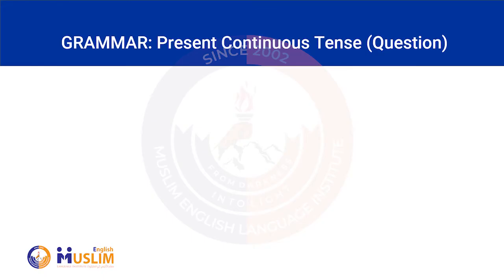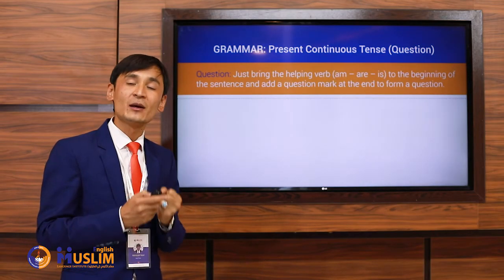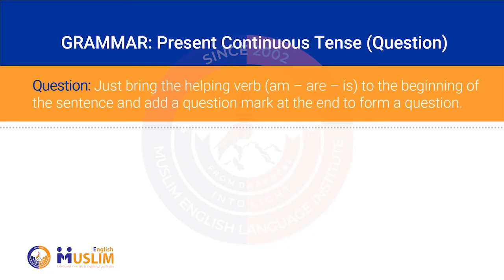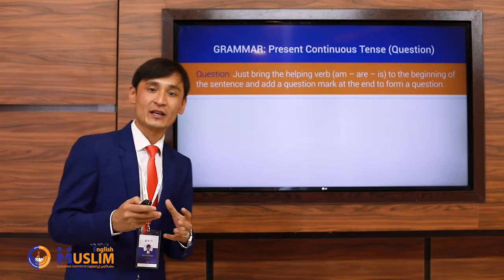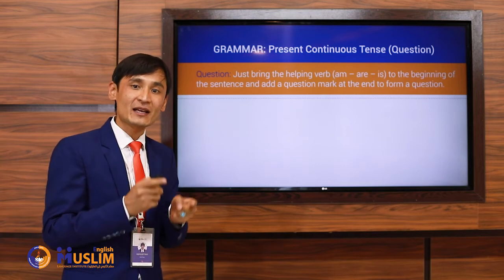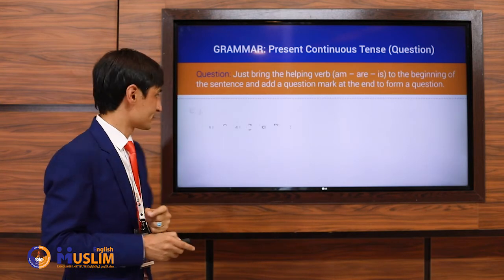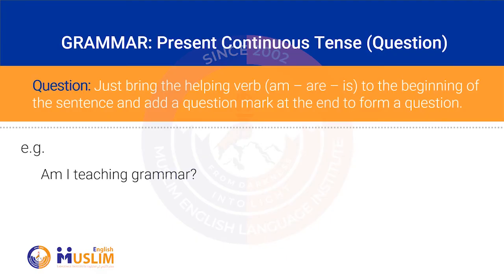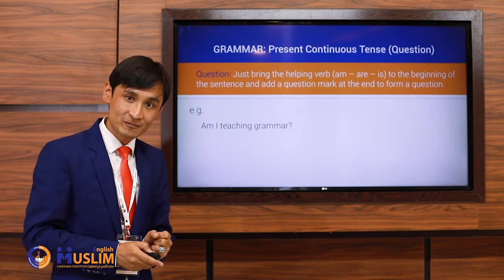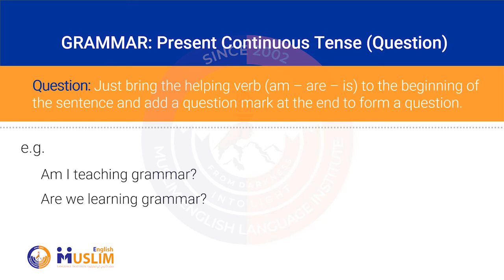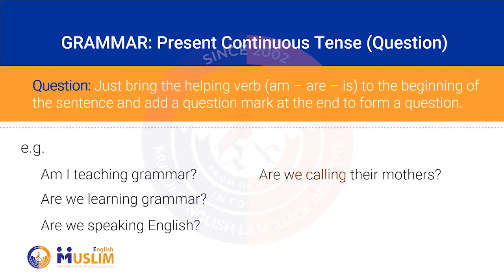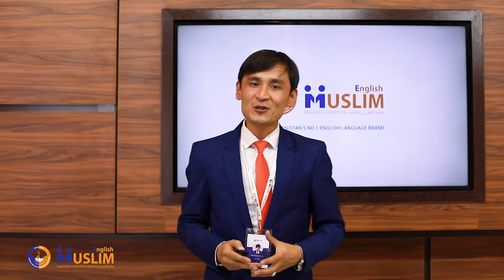Present Continuous question form: just bring the helping word am, are, or is to the beginning of the sentence, and add a question mark at the end. For example: Am I teaching grammar? Are we learning grammar? Are you speaking English? Are they calling their mothers? Is he writing a letter?